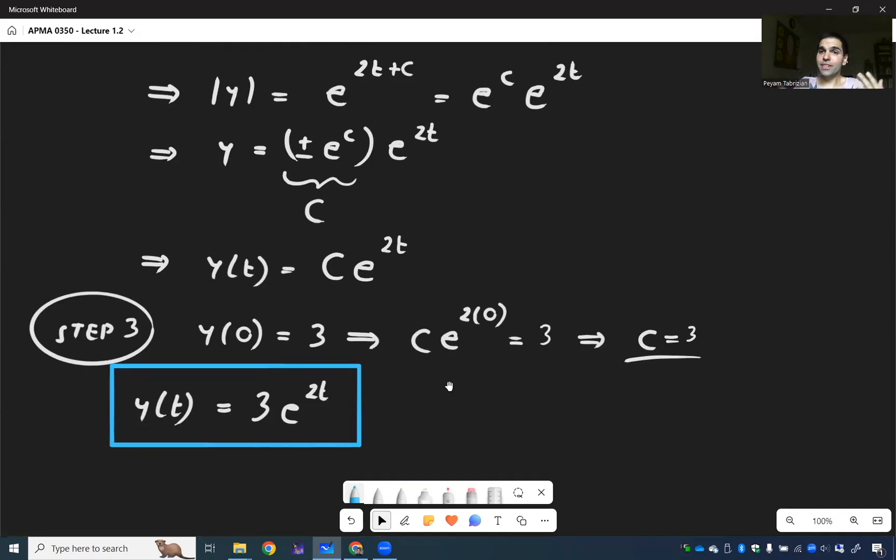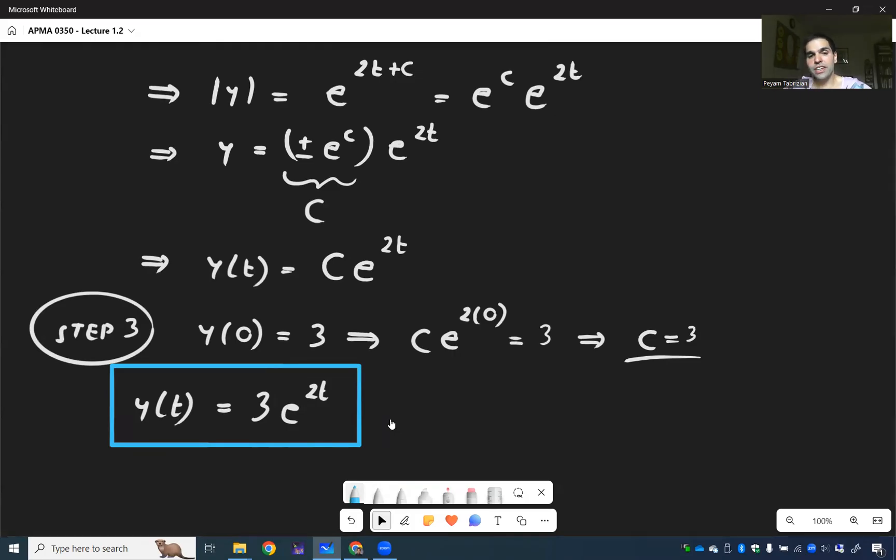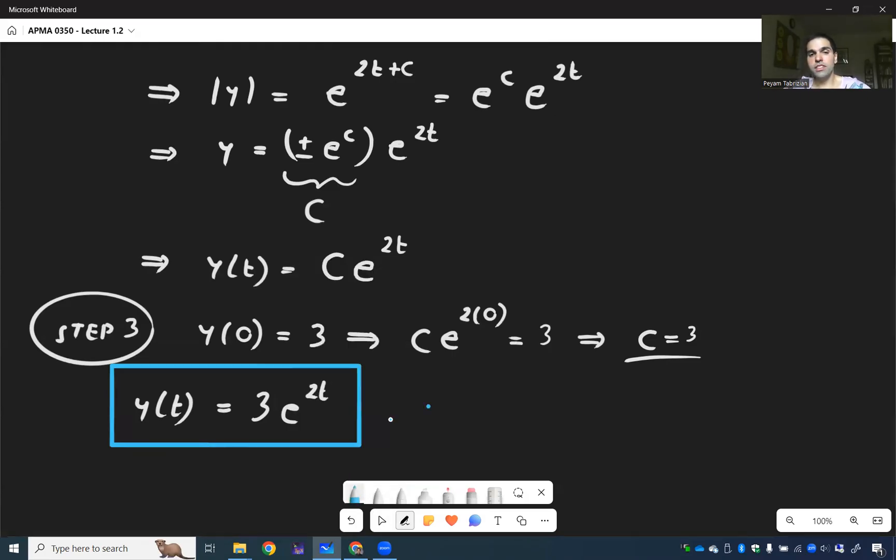Now, the cool thing is, because this is an applied math course, we can actually interpret this in terms of our model, because we said this models bacteria growth. So, really, the interpretation is, if we use this model, the population of bacteria grows exponentially.